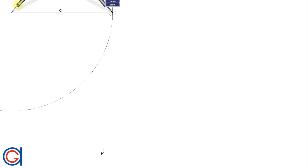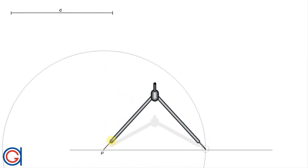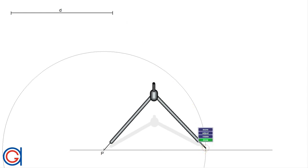So next step, setting our compass to the given length d, we are going to transport this onto our horizontal line by setting our compass on the point P and scribing an arc to obtain the second vertex, which we will call Q, as can be seen here.